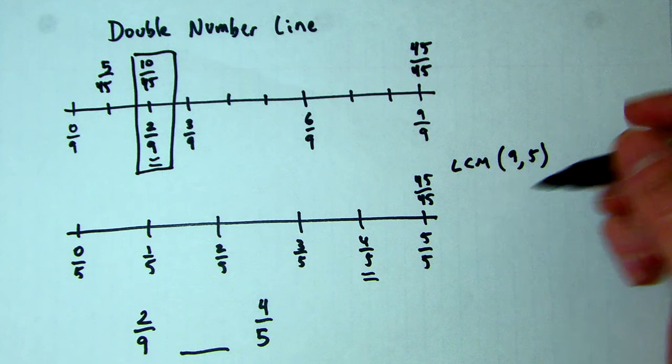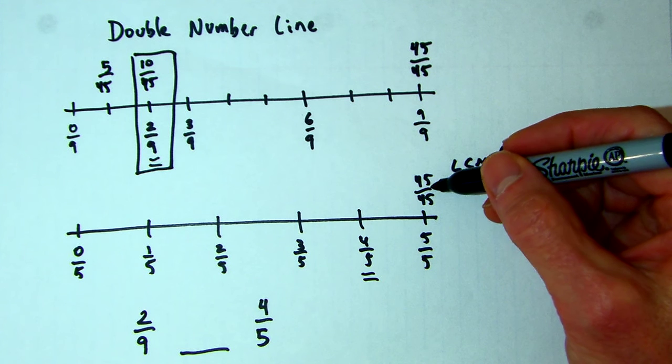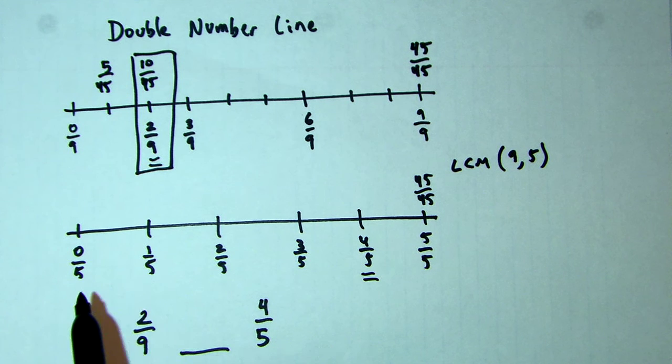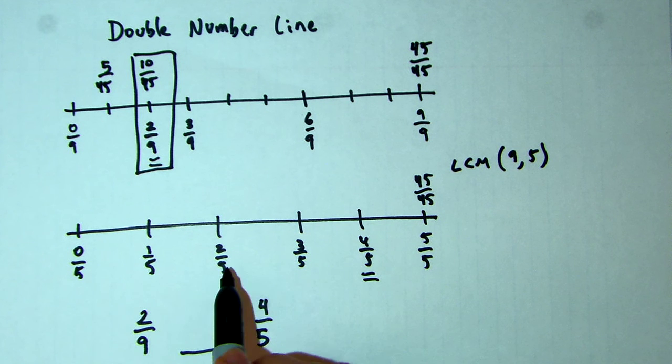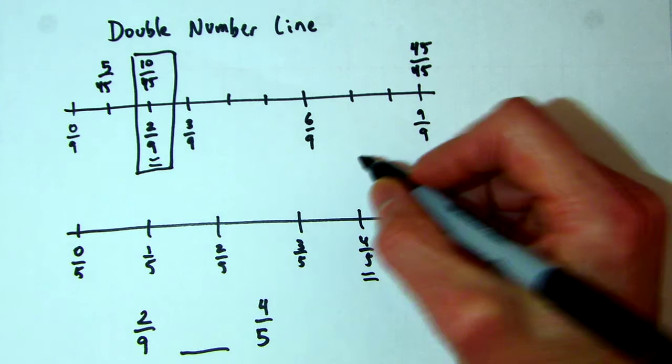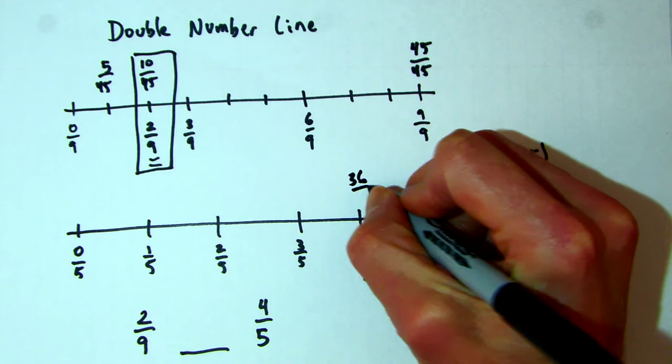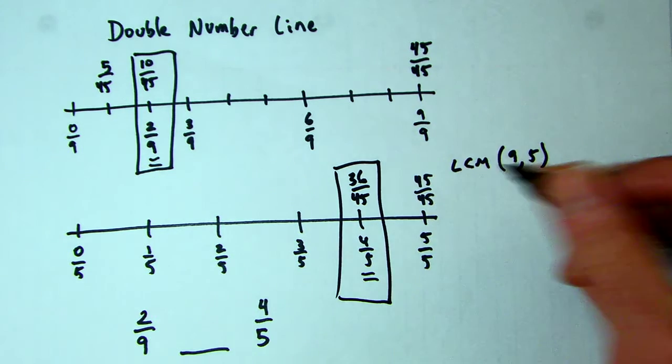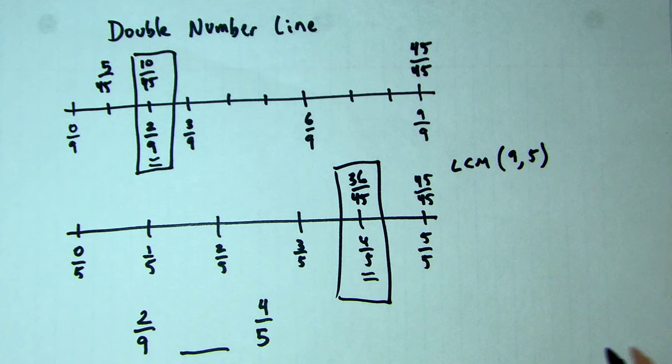Now for 4/5, each of these hops on the 45ths is going to be 9. So I'm going to have 9/45, 18/45, 27/45, 36/45, 45/45. So this is 36/45. What I've basically done is laid out two number lines where I found equivalent fractions for each of these.